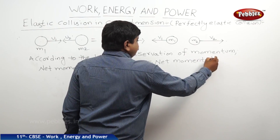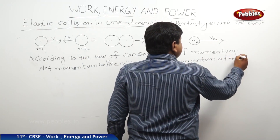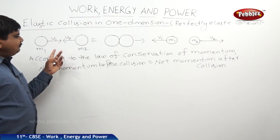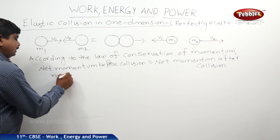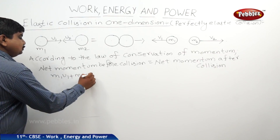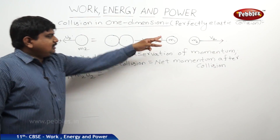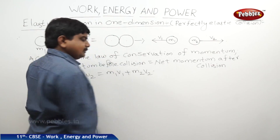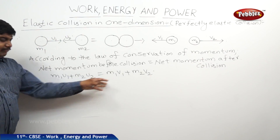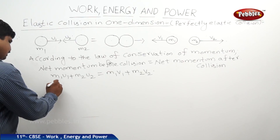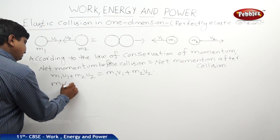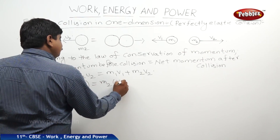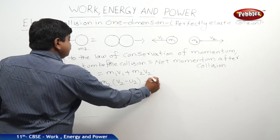The net momentum before collision is m1·u1 plus m2·u2, and this is equal to m1·v1 plus m2·v2. Bringing all m1 terms to one side and all m2 terms to the other side, we get: m1(u1 − v1) = m2(v2 − u2). Let us call this Equation 1.